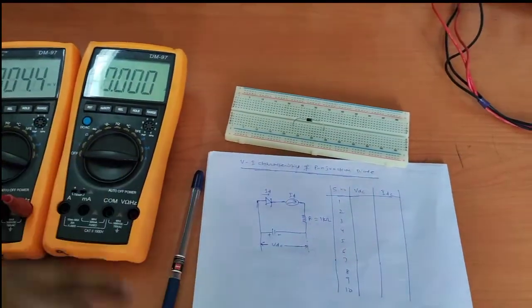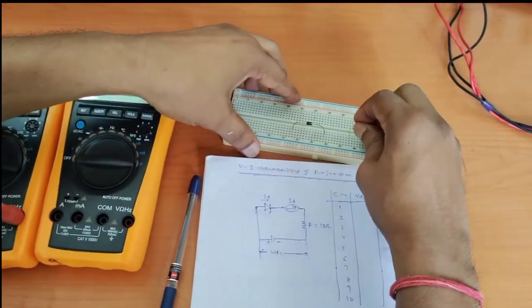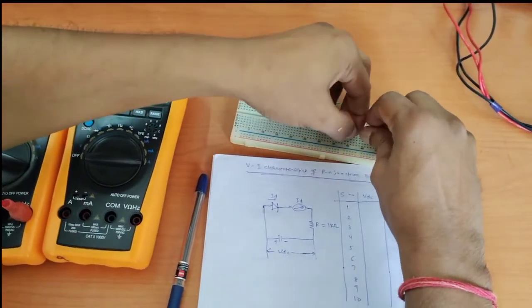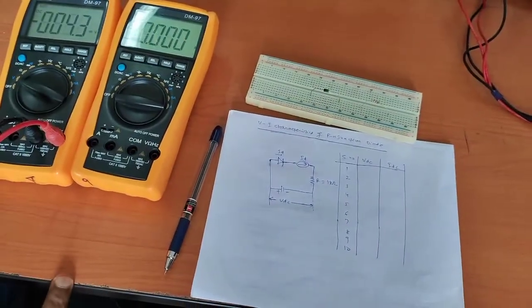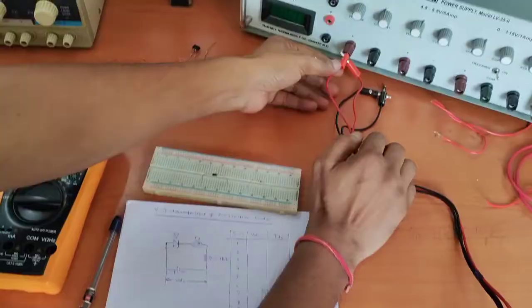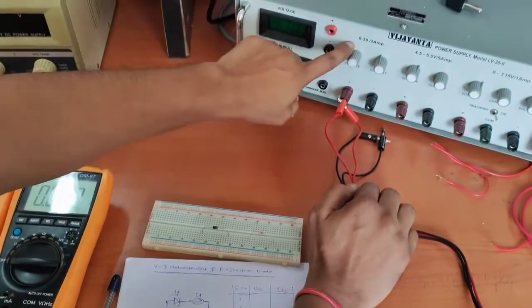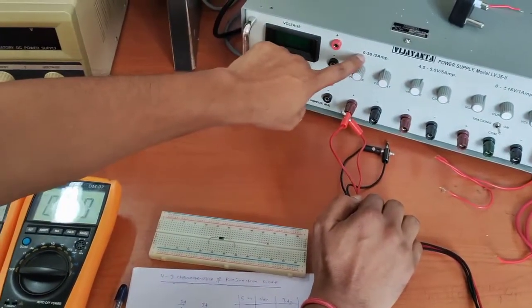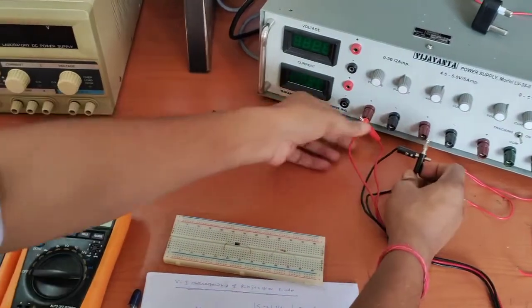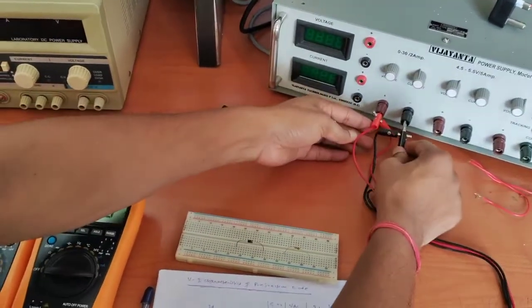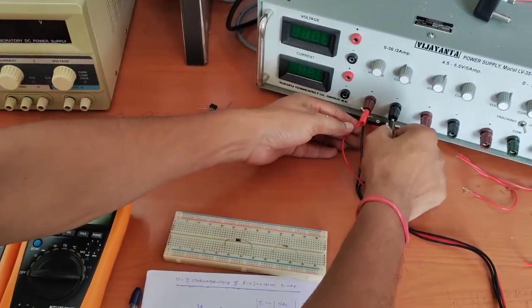We have to connect the resistor as well. This is our power supply — a 0 to 30 volt power supply. We can take power from here.